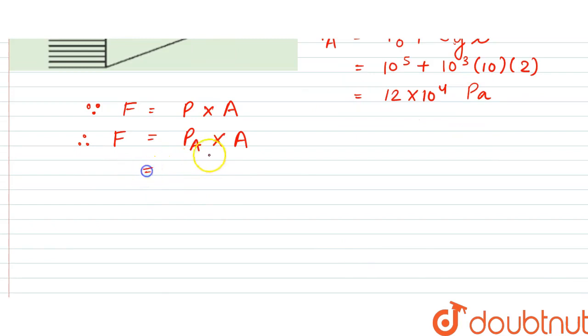be equal to, since it is 12 into 10 to the power 4, into the area would be π into r squared. So that is 1 squared, so that would be equal to 1200π